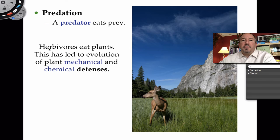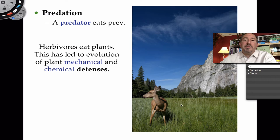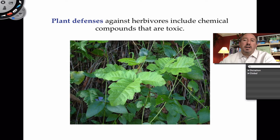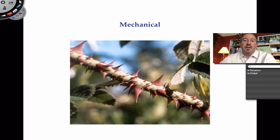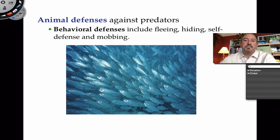The deer is eating the grass - here's the herbivore, here's the producer. Plants are not totally defenseless though. They're prey, but they have their ways of defending themselves against herbivores, both mechanically and chemically. One of the most famous chemical defenses is poison oak, which would certainly prevent a deer from eating it. Then there are mechanical defenses like thorns, which will also prevent herbivores from eating.